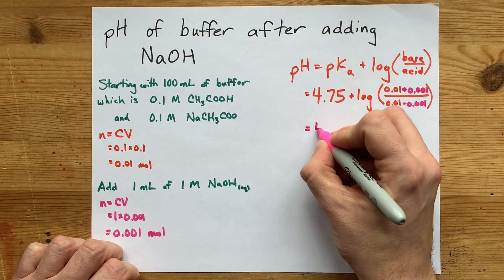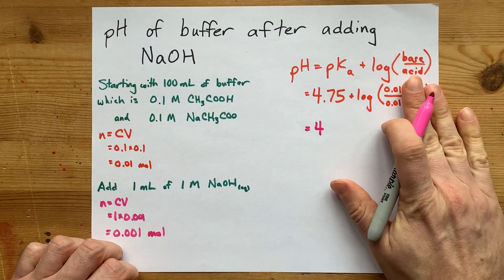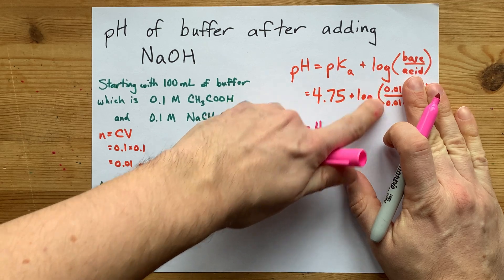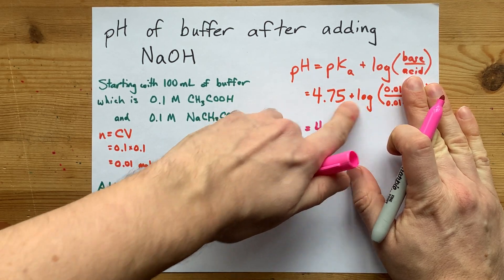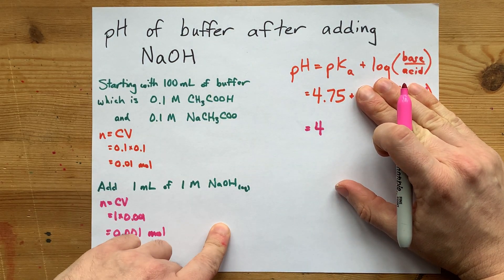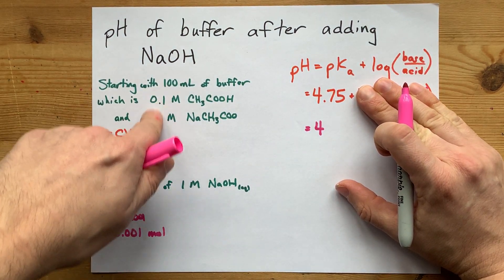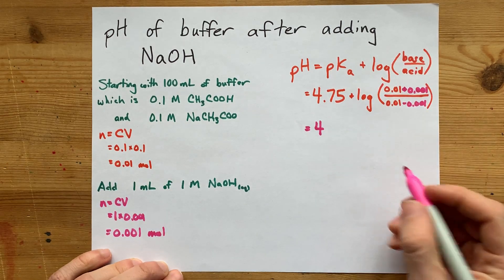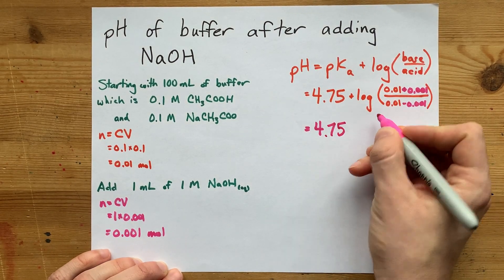The pH before I did that perturbing would have been log of something over itself. That's the log of 1. That's 0, so I'm not adding anything. The pH is 4.75 when you have equivalent amounts of acid and base here. But we are going to change it.